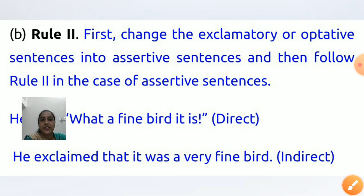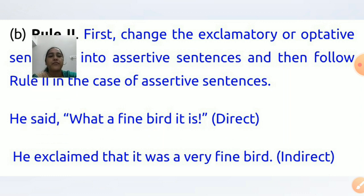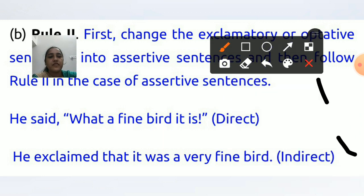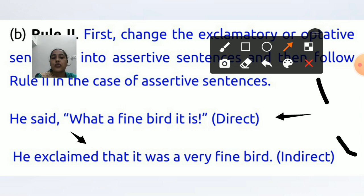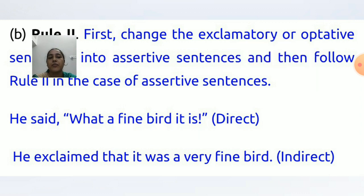Rule 2: First change the exclamatory or optative sentence into an assertive sentence, then follow the rules for assertive sentences. For example: He said, 'What a fine bird it is!' → He exclaimed that it was a very fine bird. 'What a' is removed, 'it' becomes the subject, 'is' changes to 'was', and 'a very fine bird' is placed accordingly.